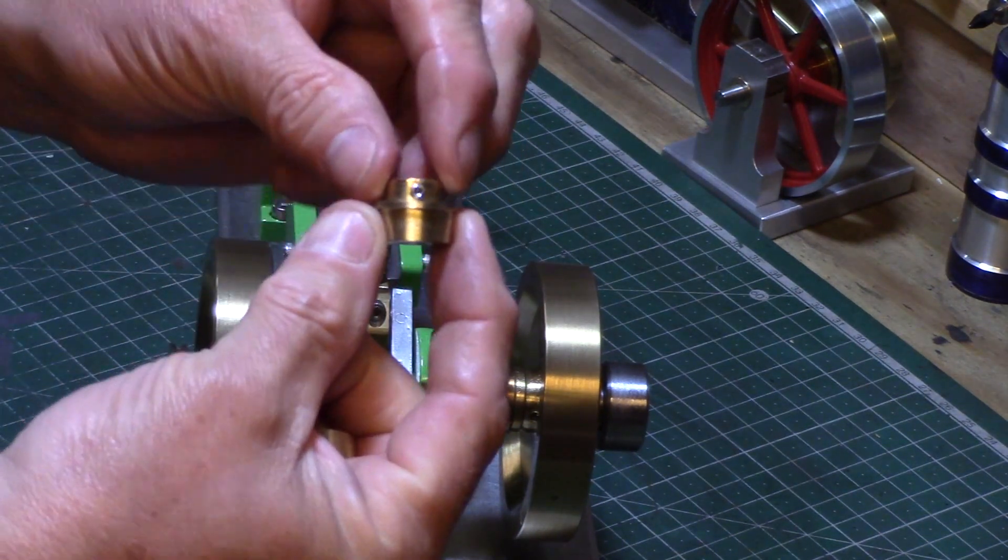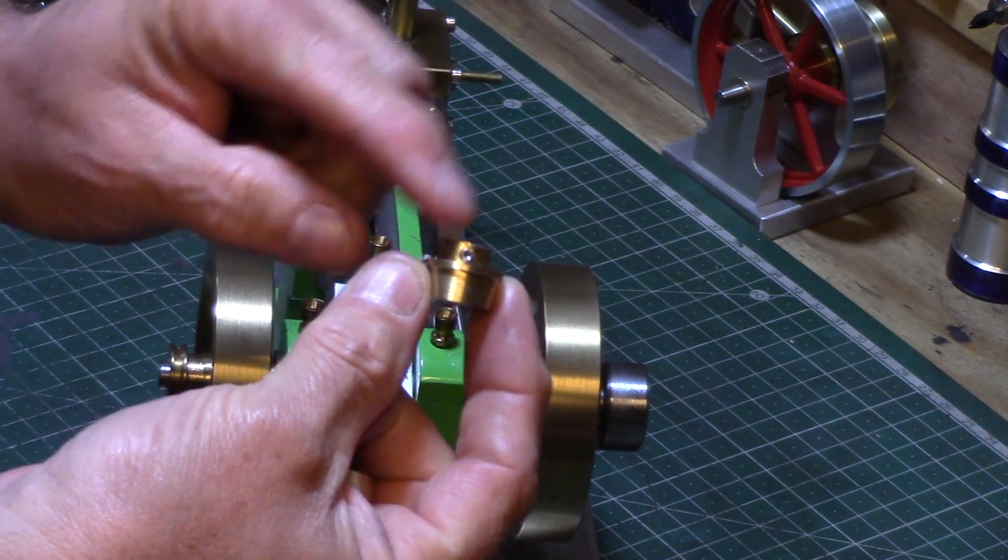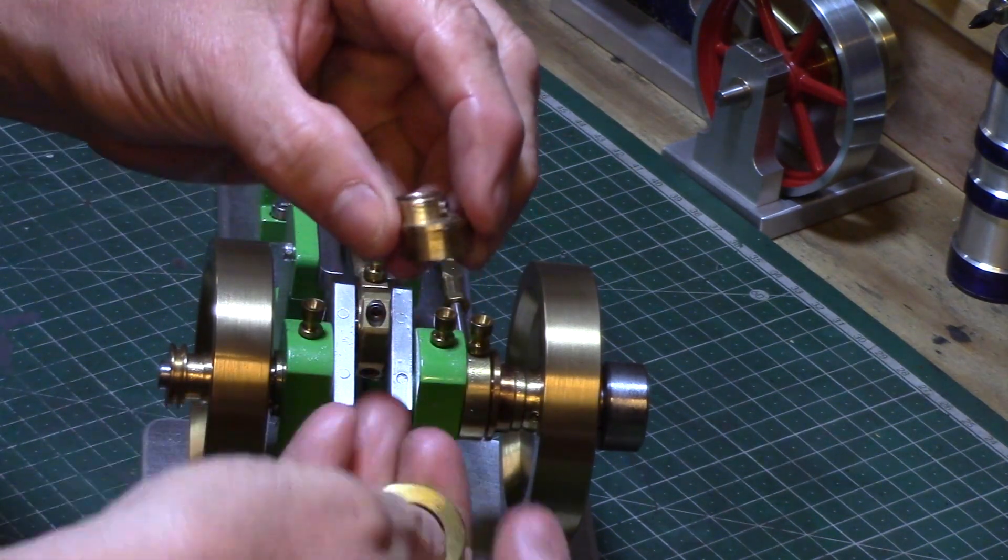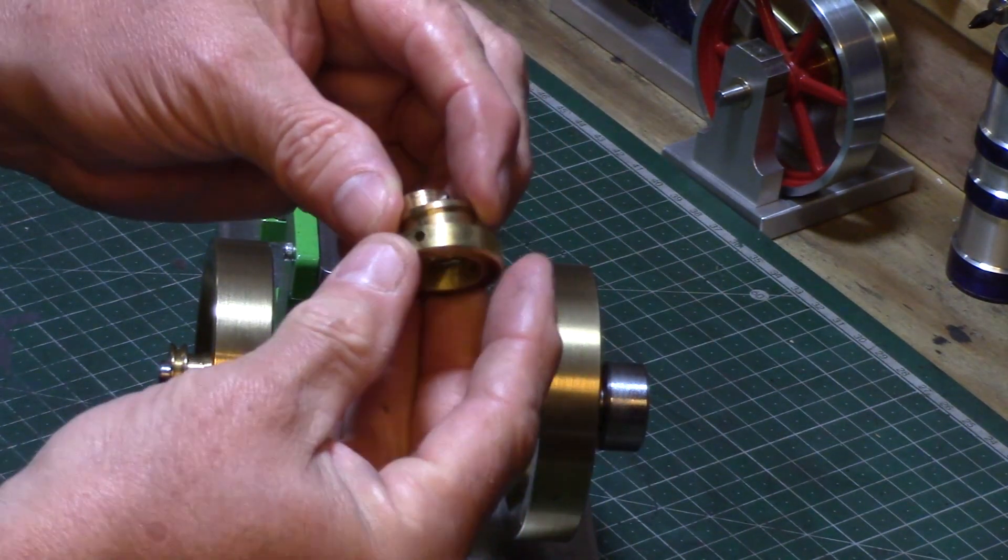This is fixed to the axle with a grub screw and a simple brass ring is used as the eccentric strap, which the valve rod simply screws into a tapped hole.